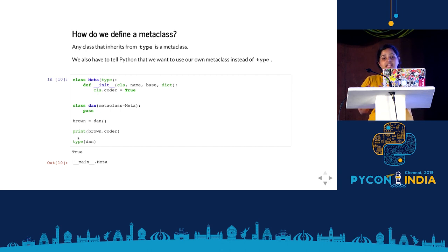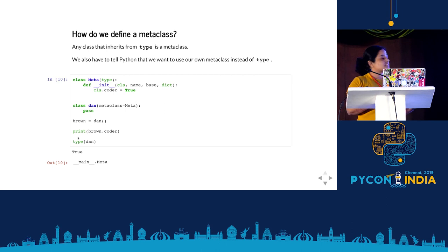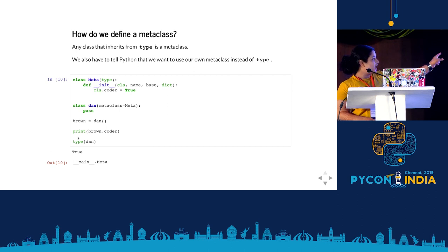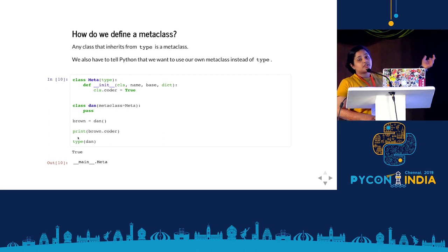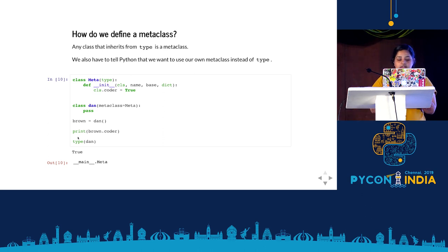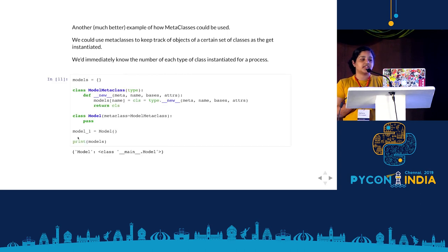You inherit from 'type' and then change whatever behavior you want — you don't want to redefine every single behavior every time. We also have to tell Python we're not going to use the default metaclass; we're going to have our own. So I have ClassMeta which inherits from 'type', and every time an object is initialized I'm saying I want a certain attribute added. I have a class where I specify this metaclass. When I initialize an object and print 'brown.coder' — voilà, it shows True. And when you check the type of that object, it's no longer the usual 'type' — it's '__main__.Meta'.